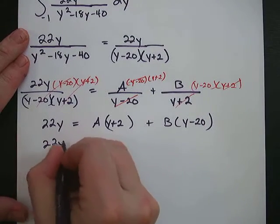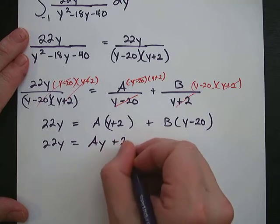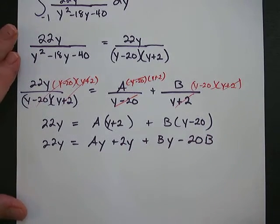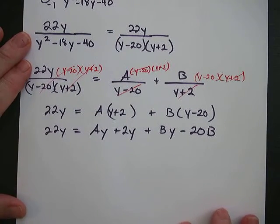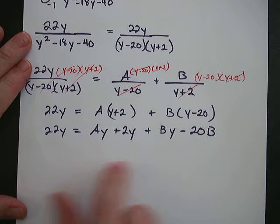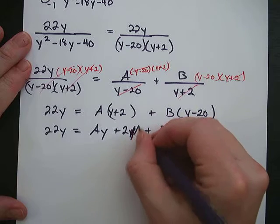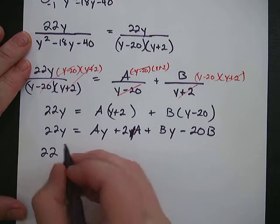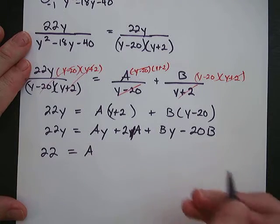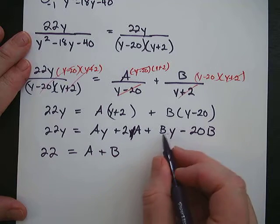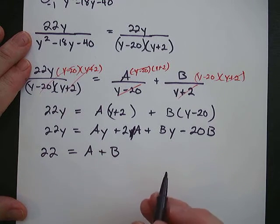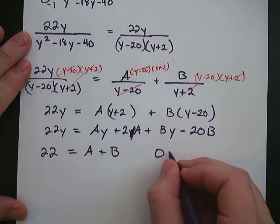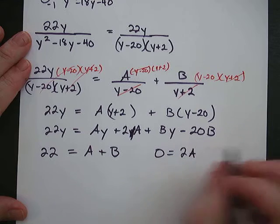We distribute A and B to get Ay plus 2A plus By minus 20B. — Actually, I made a mistake there: it's 2A, not 2y, excuse me. Now we set up two equations. The coefficients of y give us: 22 equals A plus B. The constant terms give us: 0 equals 2A minus 20B.